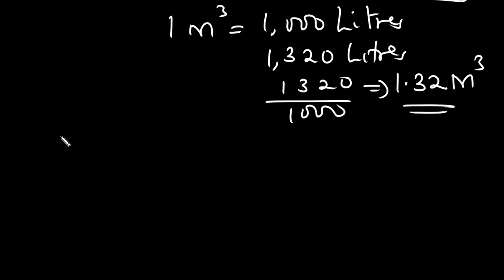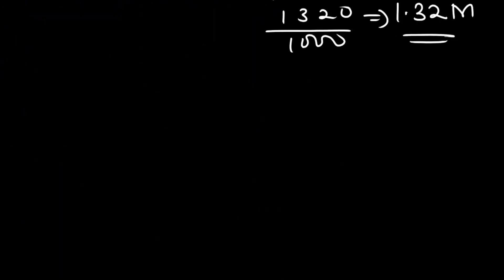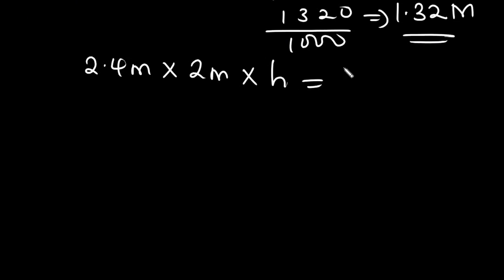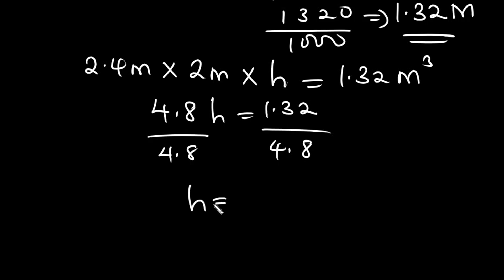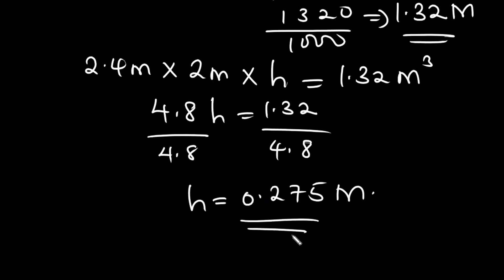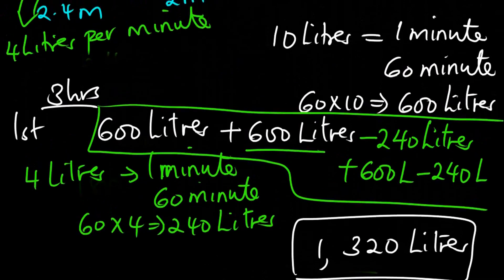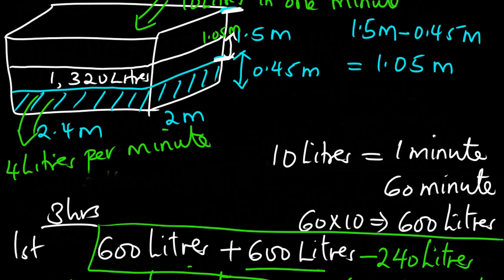To find the height, we use the tank dimensions which do not change: length 2.4 meters, width 2 meters. So 2.4 times 2 times H equals 1.32 cubic meters. That gives 4.8H equals 1.32. Dividing both sides by 4.8, we get H equals 0.275 meters. So the water level rose by 0.275 meters.